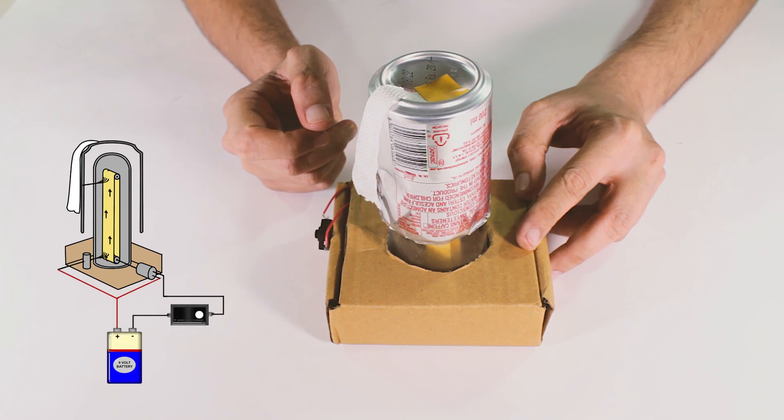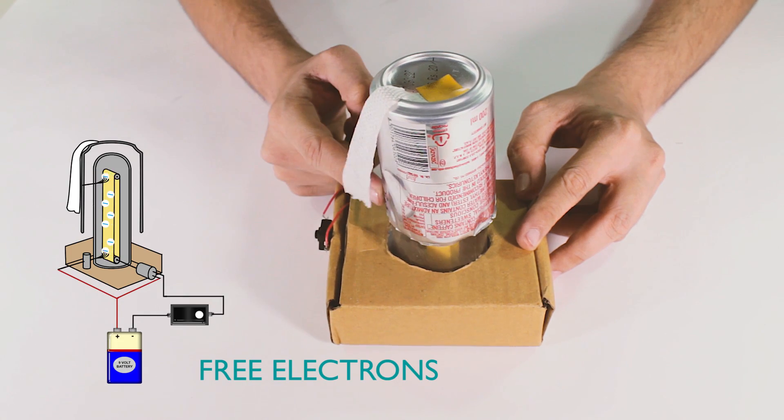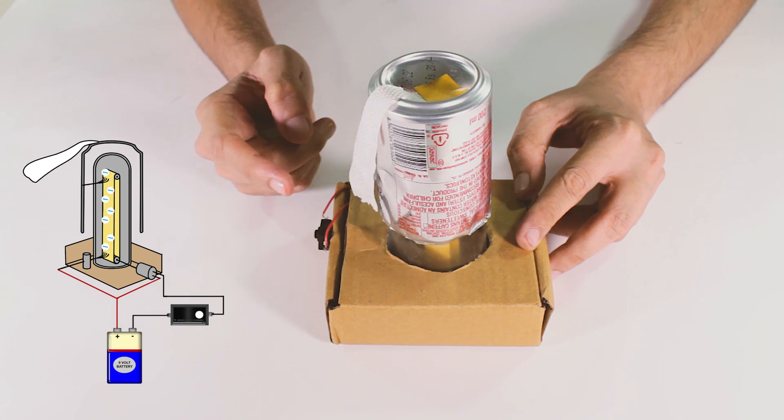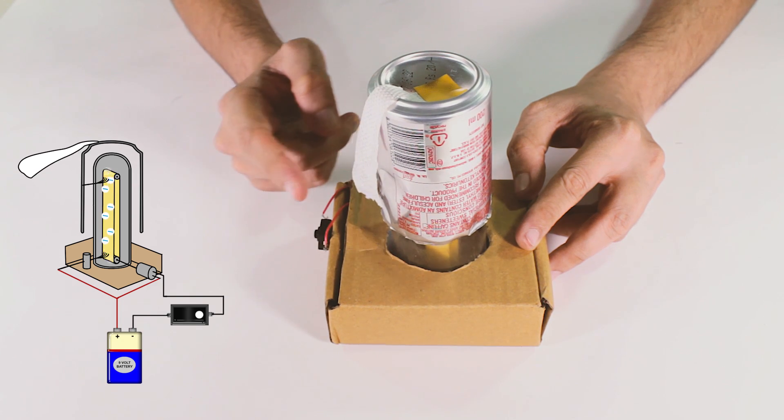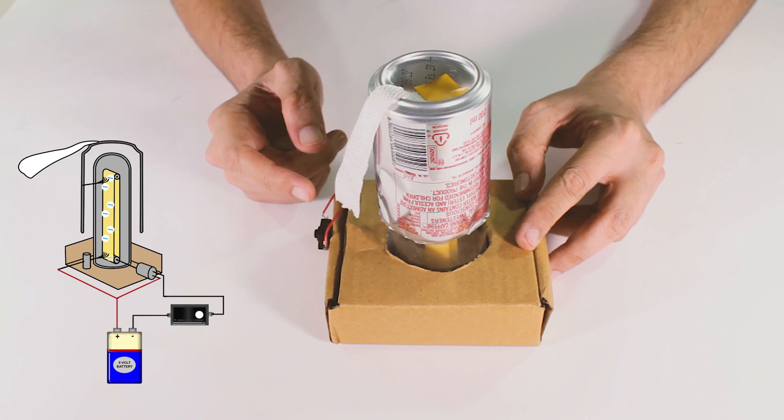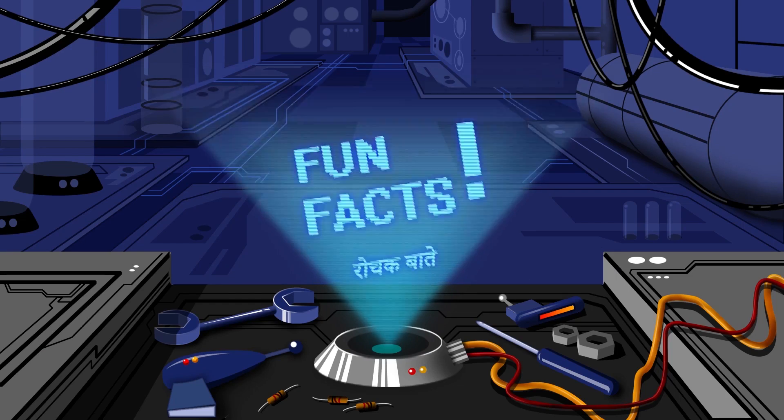The belt meanwhile becomes depleted of free electrons and needs to be replenished. And so a second brush at the bottom pulls in charge from whatever it's connected to. It's time for some fun facts.